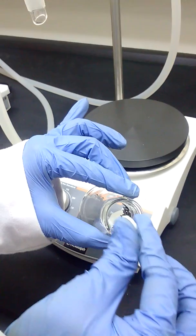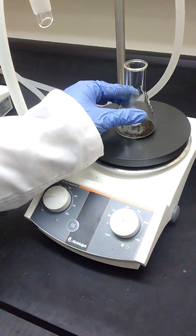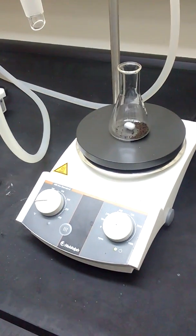To this, add a magnetic stir bar and place the conical flask on a stirrer.